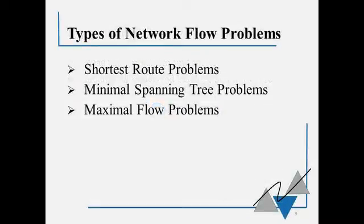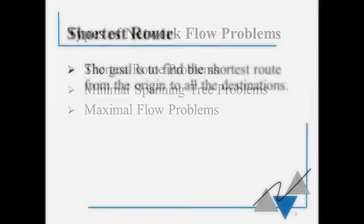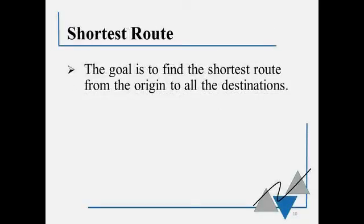There are three types of network flow problems mentioned in the book. In this video, we're going to talk about the first two, the shortest route problem and a minimal spanning tree problem. The goal in the shortest route problem is to find the shortest route from the origin to all of the destinations.